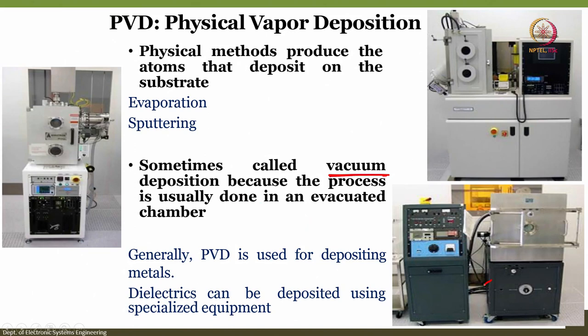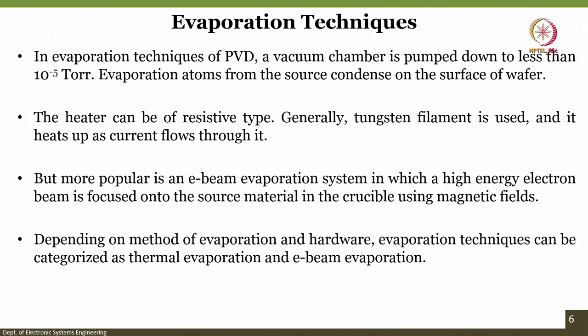In evaporation techniques of PVD, a vacuum chamber is pumped down to less than 10⁻⁵ torr. Evaporated atoms from the source condense on the surface of the wafer. Atoms do not have time to rearrange due to rapid deposition. The heater can be of resistive type — generally a tungsten filament — which heats up as current flows through it. The most popular is a system where a high-energy electron beam is focused onto source material in a crucible using magnetic fields.